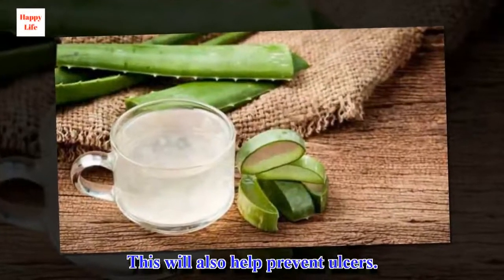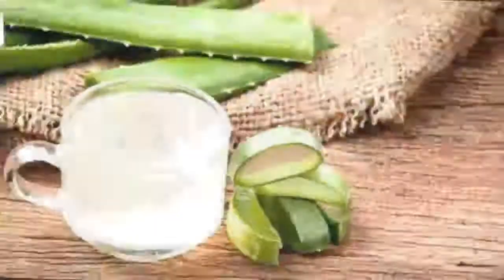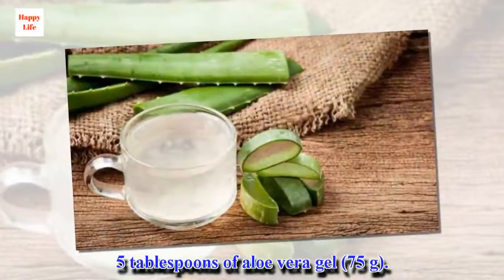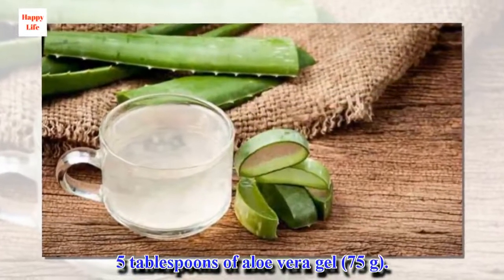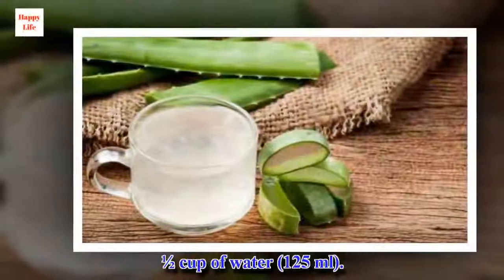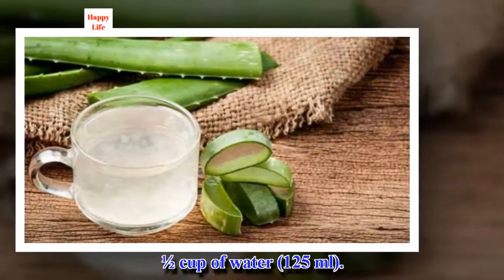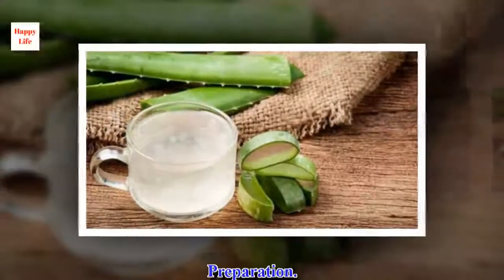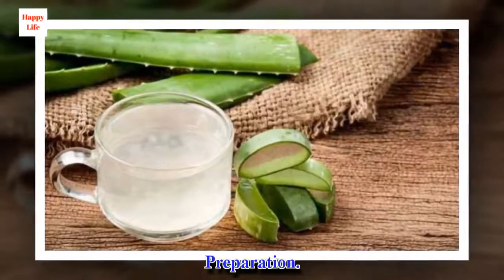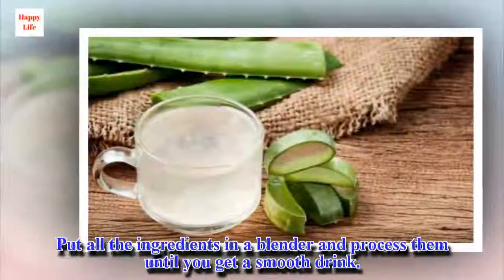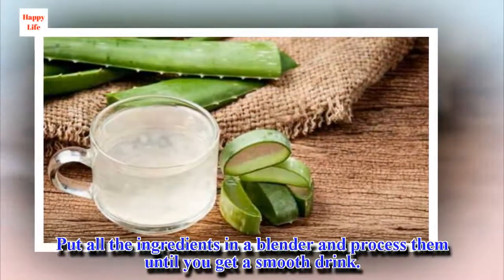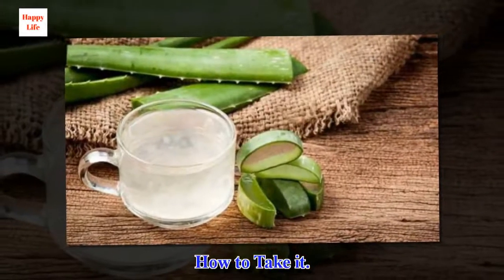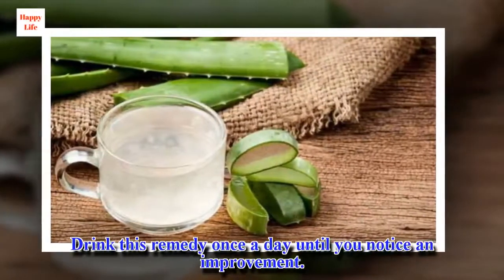Consuming aloe vera will help control the production of excess stomach acid and protect the gastric mucosa from irritation, which will also help prevent ulcers. Ingredients: 5 tablespoons of aloe vera gel, half a cup of water, and 1 tablespoon of honey. Preparation: put all the ingredients in a blender and process them until you get a smooth drink. Drink this remedy once a day until you notice an improvement.